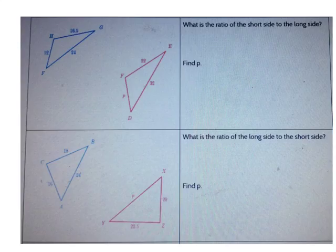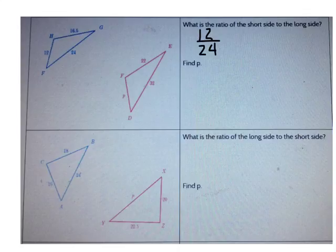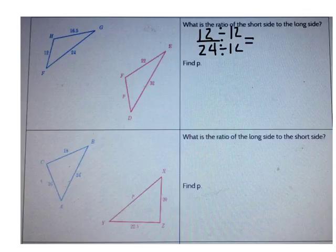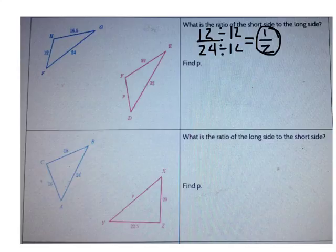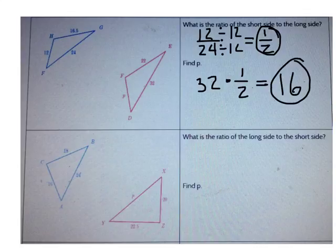Let's do a few more. Look at these two triangles. What's the ratio of the short side to the long side? The short side I know in triangle FGH is 12 and the long side is 24. The greatest common factor of 12 and 24 is 12. When I divide both by 12, I get 1 half. So the short side is always 1 half the length of the long side. The long side in triangle DEF is 32, so I can multiply by 1 half to find p. 32 times 1 half is the same as 32 divided by 2, which is 16. p equals 16.